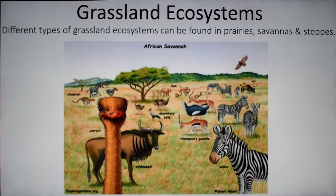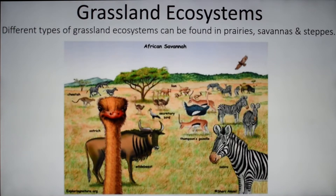Within this savanna, we have living and non-living things. We have the ostrich, the tiger, and the vulture. But we also have non-living things: we have dirt, air, and water. Even though we don't see any water there, they have to have water to survive.